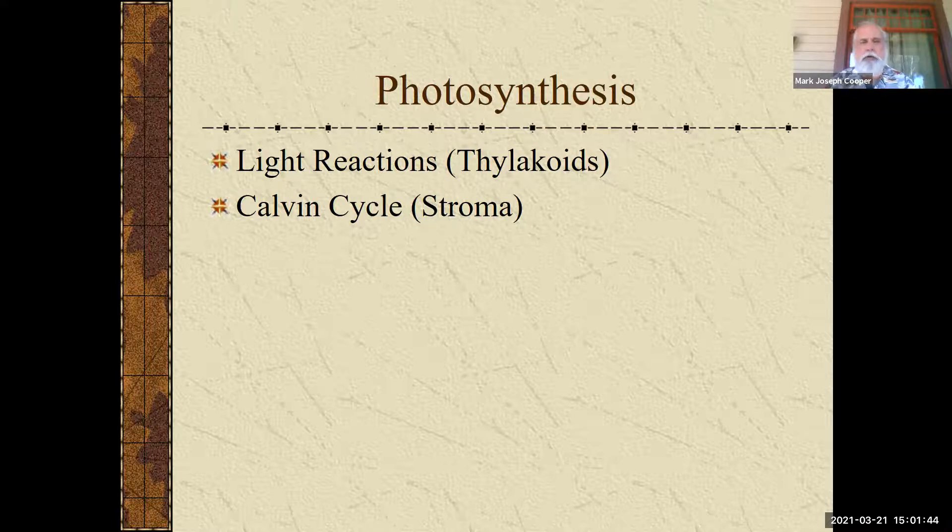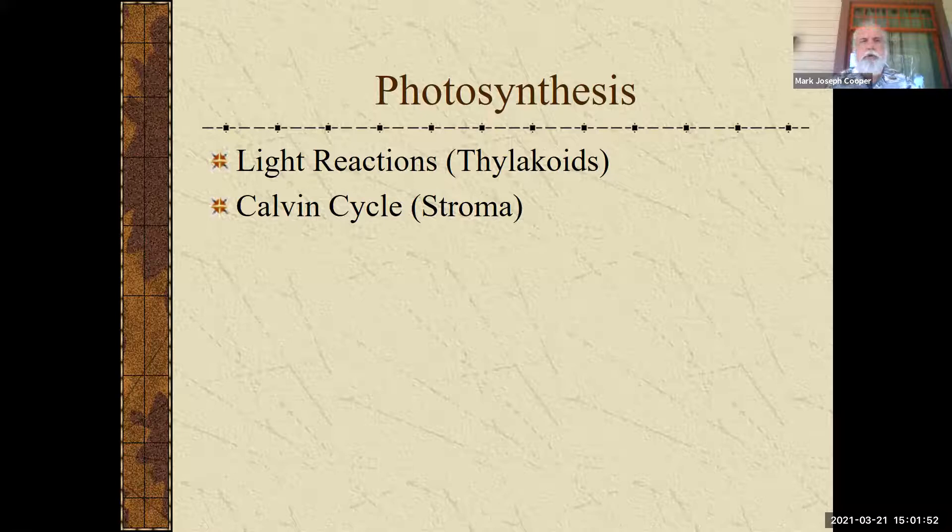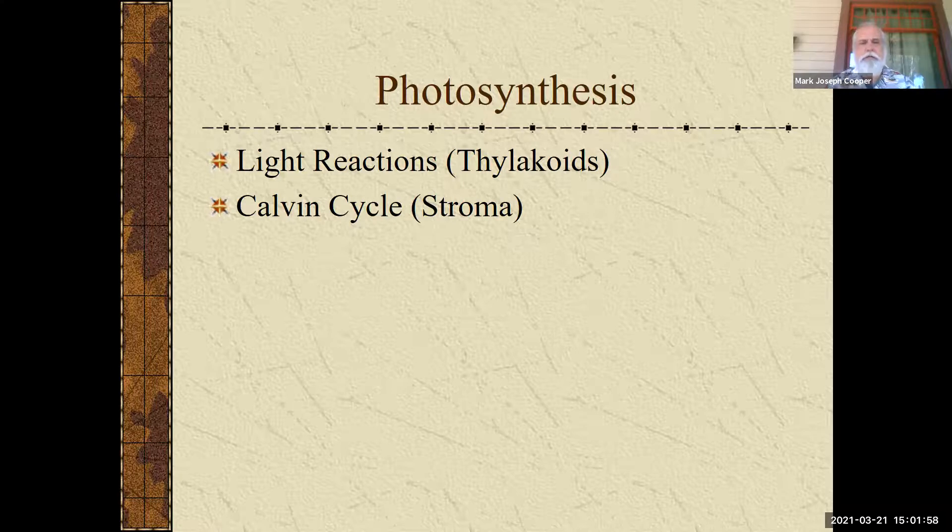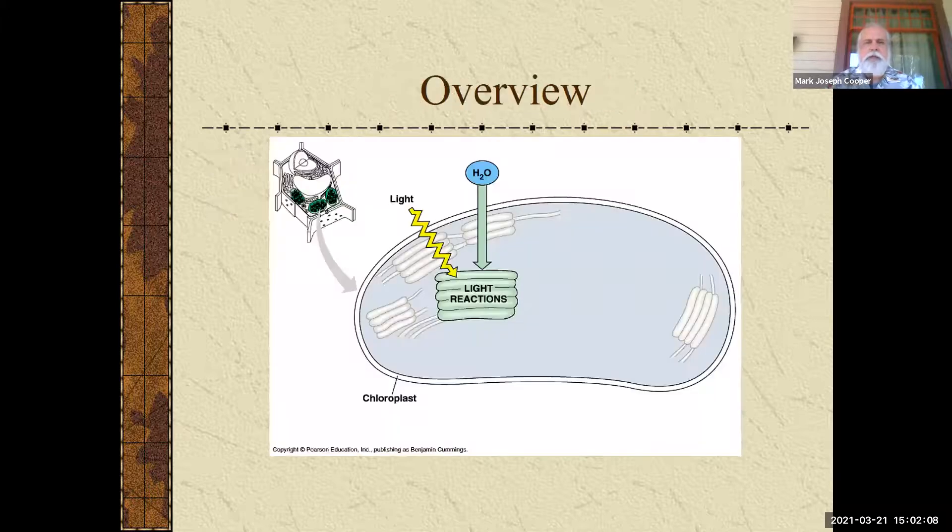Also, it's called the light independent reactions. So there's another name for it. And then the older term even is the dark reaction. So that one has several different connotations. But for my purposes, I basically use the light reactions or light dependent reactions and the Calvin cycle or the light independent reactions. It happens in the stroma.